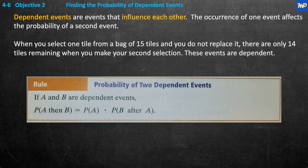Objective two: finding the probability of dependent events. Dependent events are events that influence each other — the occurrence of one event affects the probability of the second. When you select a tile from the bag and do not replace it, there are only fourteen tiles remaining for your second selection. These events are dependent because the probability changes: the first draw is out of 15, the next is out of 14. The probability of two dependent events A then B is P(A) times P(B after A).